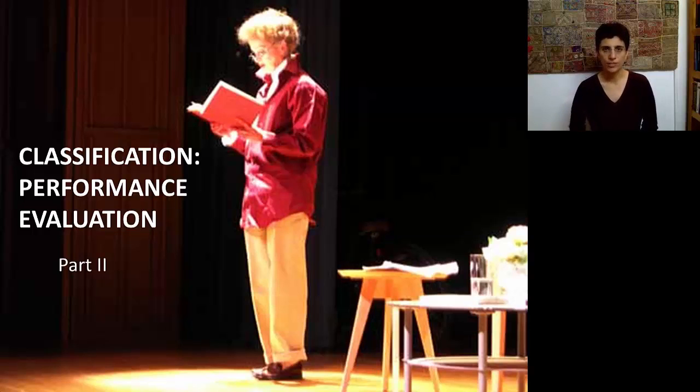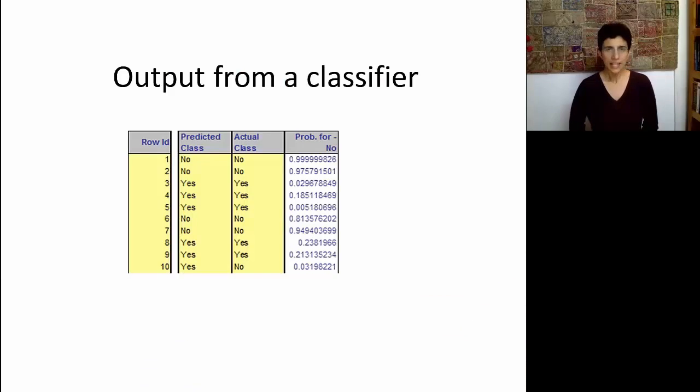So let's start looking at some performance measures. Classifiers will give us an output that usually looks like this. We're going to get a probability for a certain class. Suppose we have yeses and nos in this example, so here our classifier is giving us, for each record, the probability for a no. Classifiers that yield this type of probability are called propensity models. All the classifiers that we'll see in this course are propensity models.